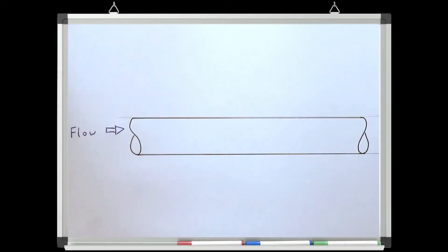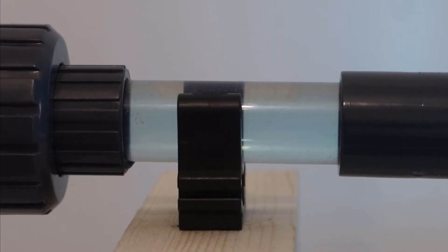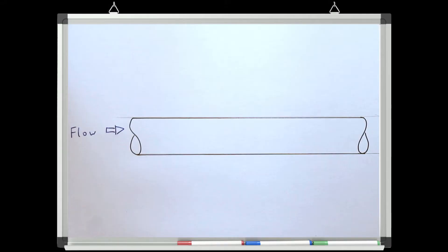Consider water flowing through a pipe. Pipe flow is defined as a flow where the fluid is moving through a pipe and the pipe is completely full with that fluid. The key to this definition is that the fluid does not have a free surface to atmosphere within the pipe; rather, the fluid is pushing against the wall of the pipe. Whenever we refer to pipe flow in this lesson series, this is what we mean — that the pipe is completely full of water.